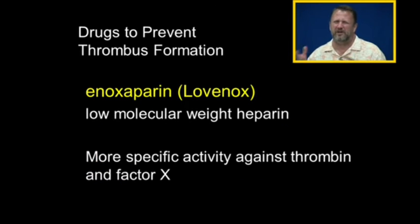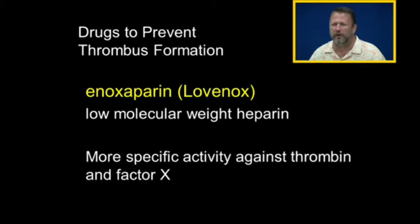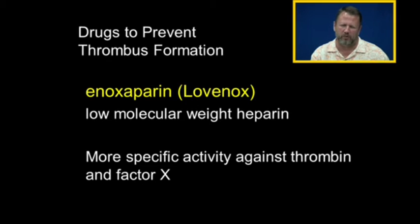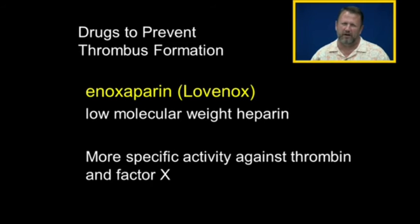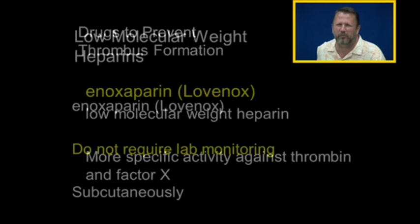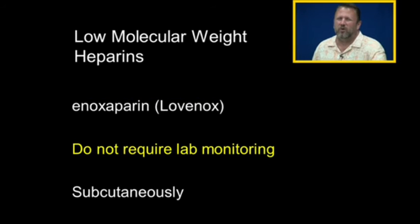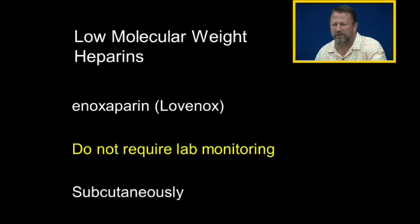Enoxaparin comes from heparin. Heparin is like a mixture of different molecules — different heparins make up heparin. Enoxaparin, Lovenox, is one of them. It's a fractionated heparin — they take the heparin, purify it, and get a specific molecule. It's called low molecular weight heparin, and it works just like heparin does: it binds to antithrombin 3 and increases its activity. However, it has more activity against thrombin and factor 10. Importantly, low molecular weight heparins do not require lab monitoring — people on Lovenox do not need their PTTs checked every six hours.